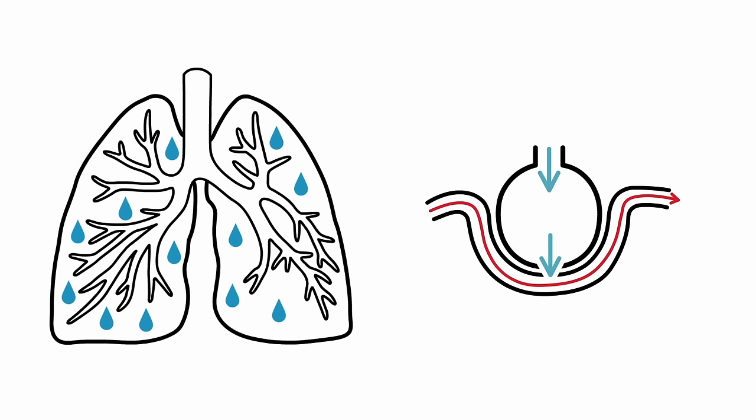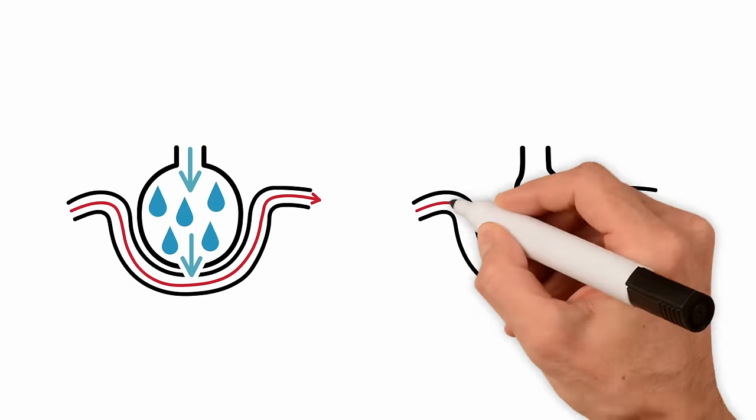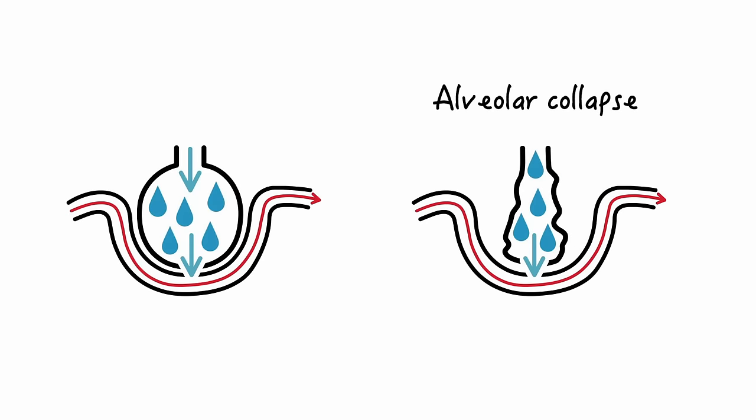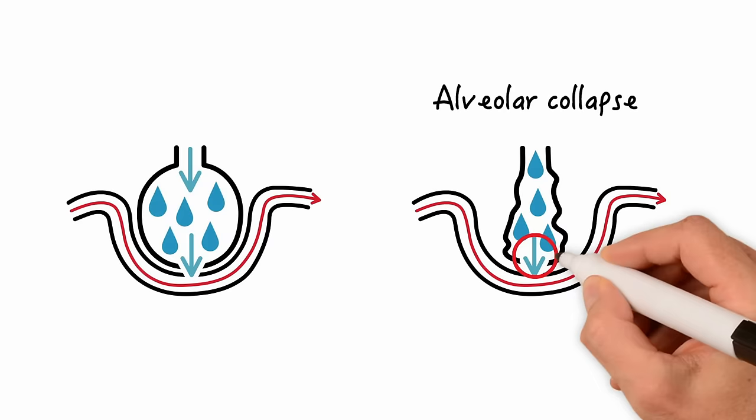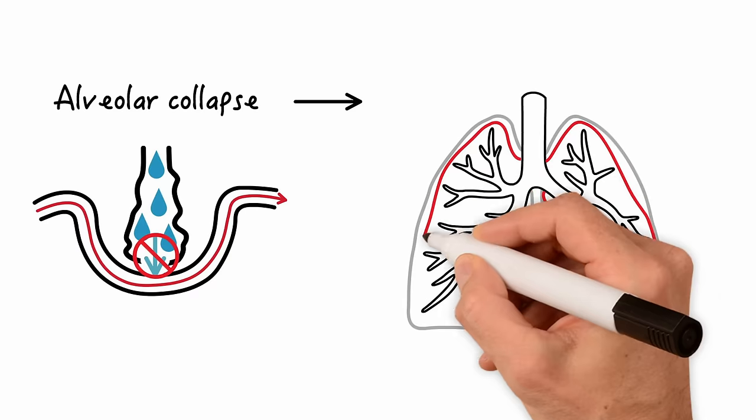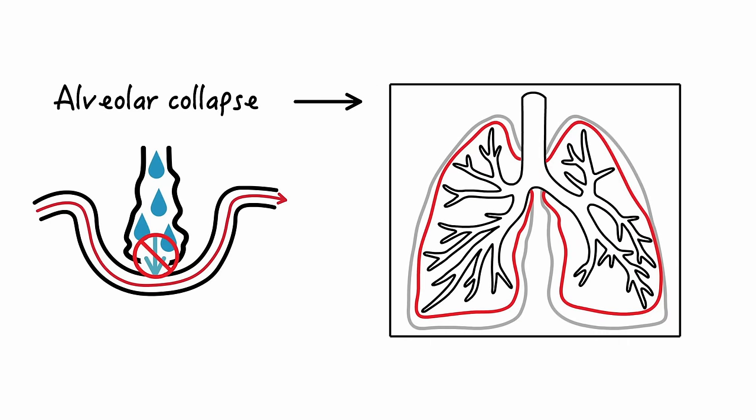But in ARDS, fluids fill the air sac. The integrity of some of the alveoli will be compromised, often leading to alveolar collapse or atelectasis. This will ultimately compromise gas exchange. As a result of diffuse alveolar collapse, the lung will appear to shrink on a chest x-ray film.